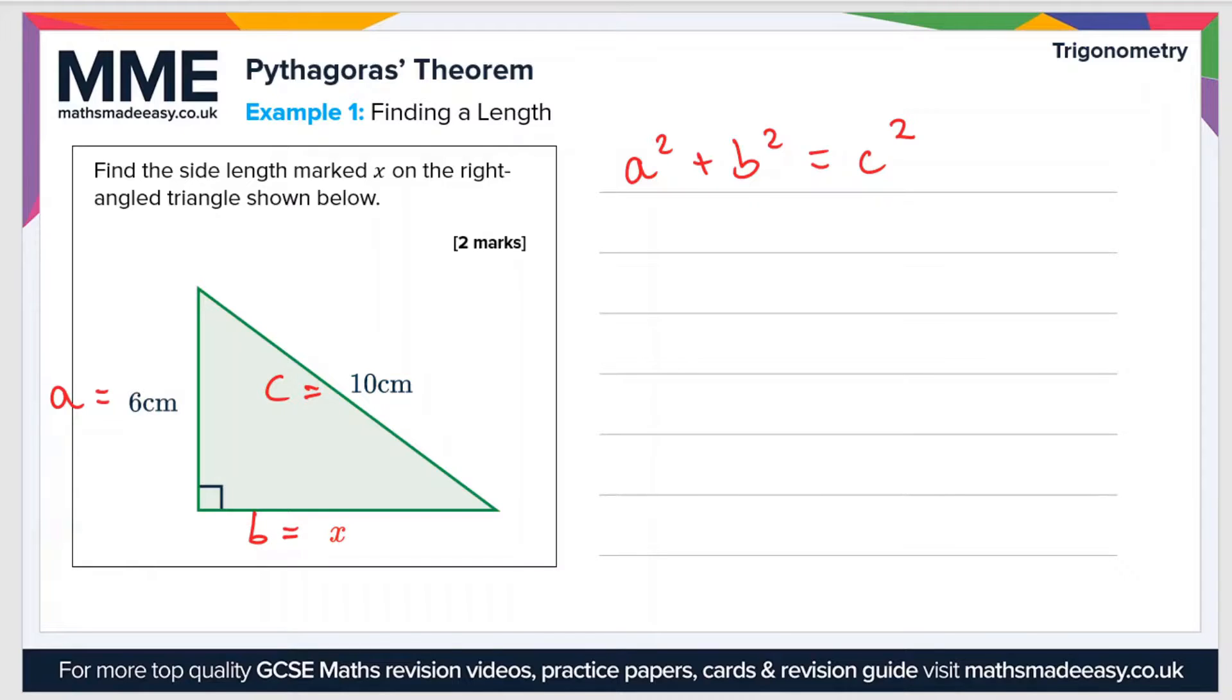If we substitute those values into our expression, then we get that 6 squared plus x squared equals 10 squared. If we square the value for 6, we get 36 plus x squared equals 100. Let's rearrange this to make x the subject now. So x squared equals 100 minus 36, which is 64. So if x squared is 64, then x is the square root of 64, and that is 8.